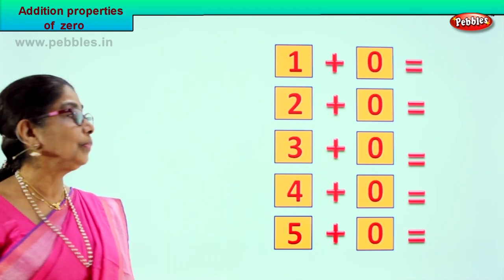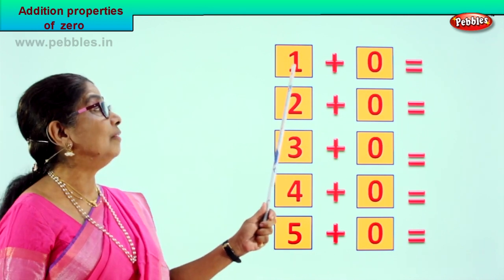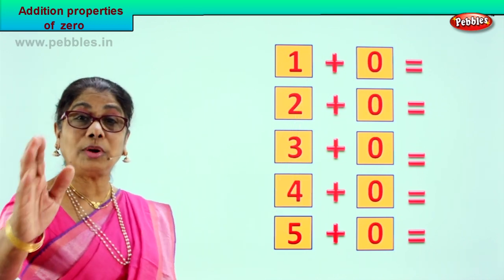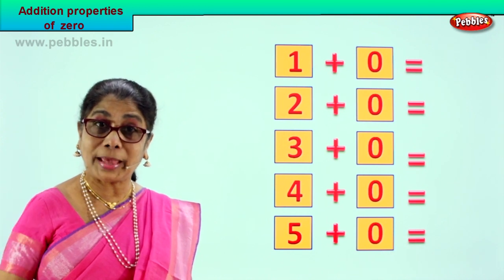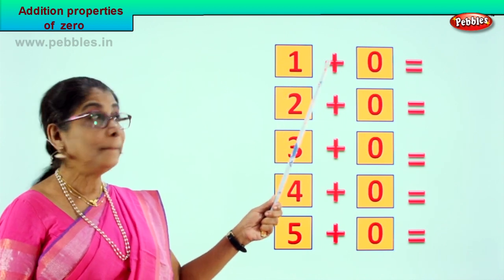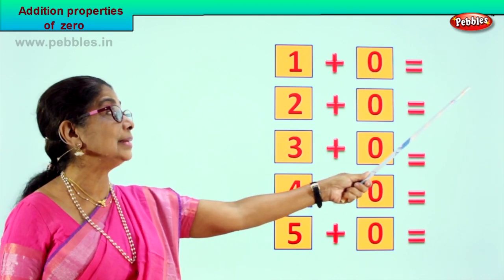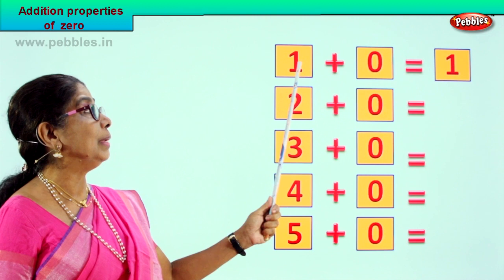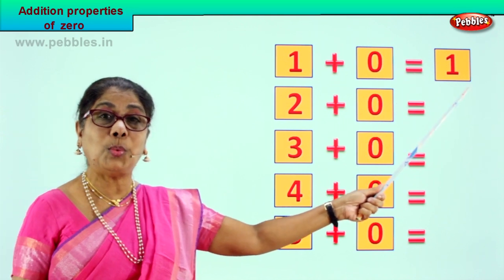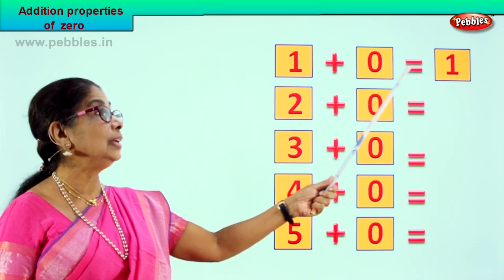Let's go to the exercise. Look what we have here, children. We have all numbers here — plus zero gives you what? One by one we will do together. It's very interesting, very enjoyable. One plus zero is equal to one itself, because there is no number here. One plus zero is equal to one.